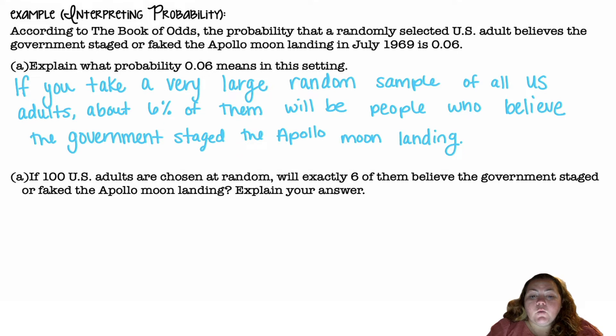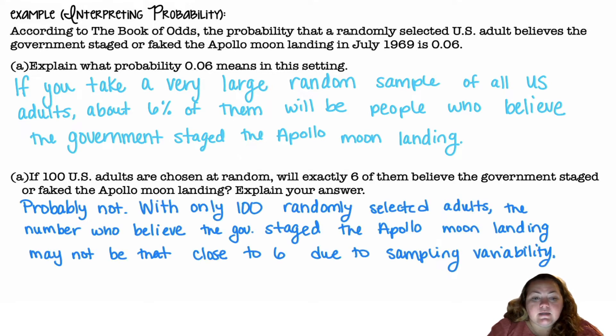If 100 U.S. adults are chosen at random, will exactly six of them believe the government staged or faked the Apollo moon landing? Probably not exactly six. With only a hundred randomly selected adults, the number who believe the government staged the Apollo moon landing may not be that close to six due to sampling variability. You're not always gonna get six for every 100, but if you took many more than a hundred, it would end up averaging out to be about six percent.